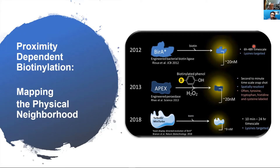The major difference between these two technologies is the kinetics of labeling, which ranges from minutes to hours or days. That's why there was a need to develop newer technologies — currently TurboID and mini-TurboID — which dramatically reduce not only the labeling radius but also reduce labeling time to about 10 minutes to several hours, without the need for cytotoxic agents like hydrogen peroxide.